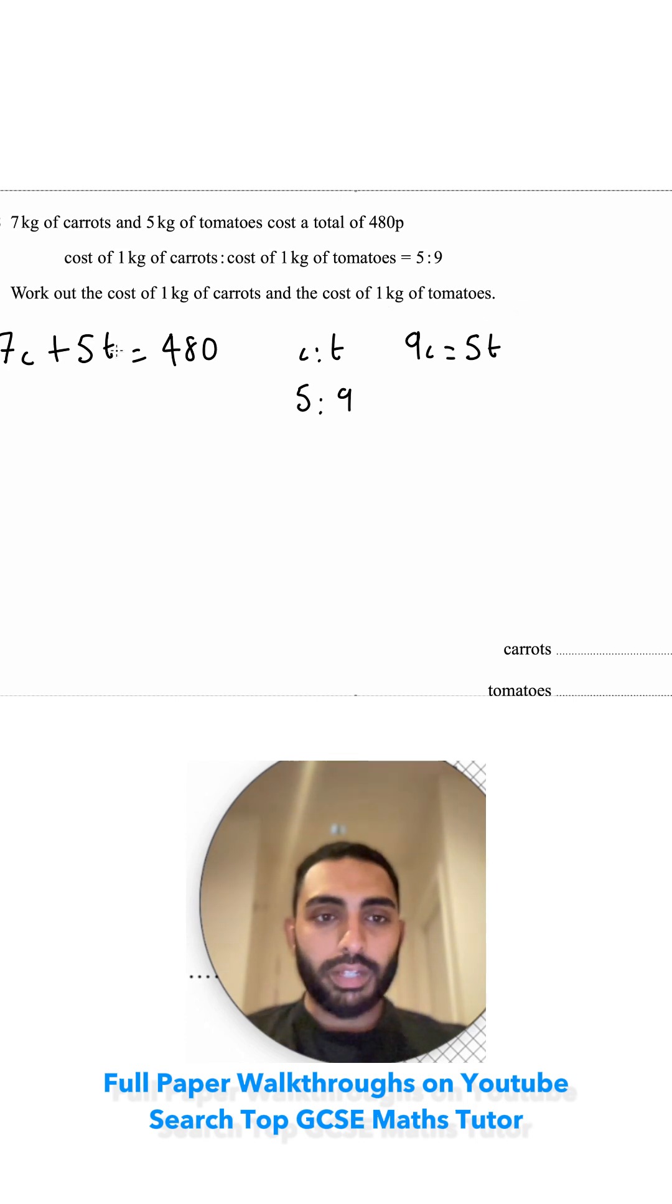First thing that I want to do is have the same variable in here. I don't want a c and a t. I want them all to be the same thing. Right now I can't solve it because there's two different letters. So I'm going to swap this 5t with 9c. So 7c, that 5t is equal to 9c plus 9c is equal to 480.